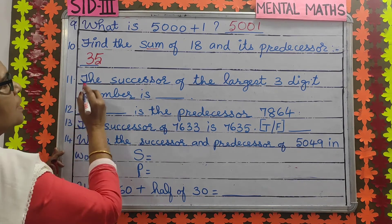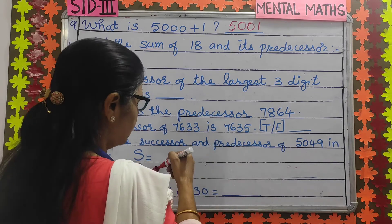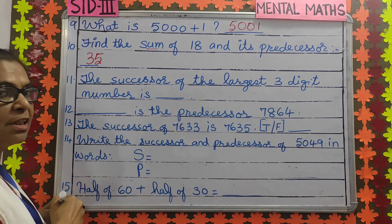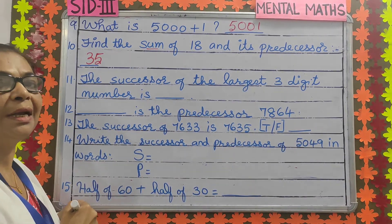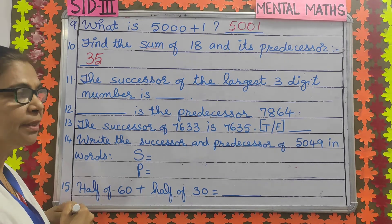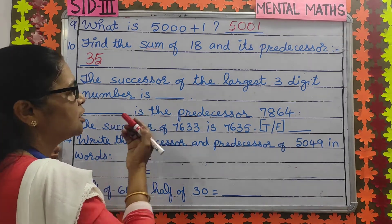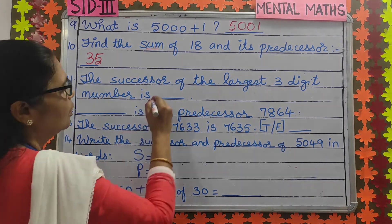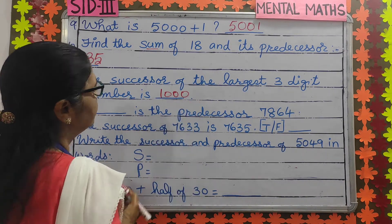Number 11: the successor of the largest 3-digit number. Which is the largest 3-digit number? 999. So what is the successor of 999? 1,000.